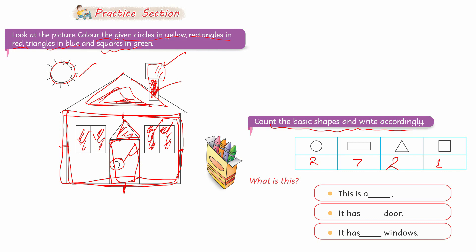This is a house. It has a door, which is a rectangle shape — write rectangular. The windows are also rectangular shapes. Looking at numbers: it has one door and two windows, so rectangles total that accordingly.